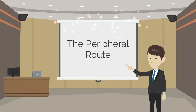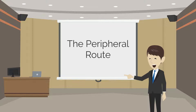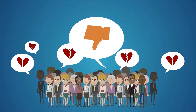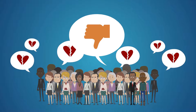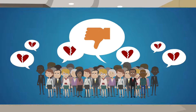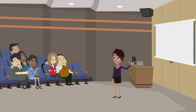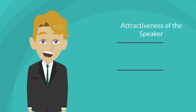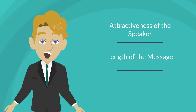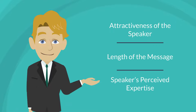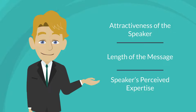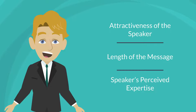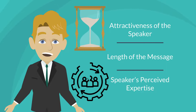In contrast, the peripheral route to persuasion is used when individuals are either not motivated or not able to analyse the message deeply. Instead of focusing on the content, individuals rely on superficial cues or heuristics, such as the attractiveness of the speaker, the length of the message, or the speaker's perceived expertise. Attitude changes that occur through the peripheral route tend to be more temporary and susceptible to change.